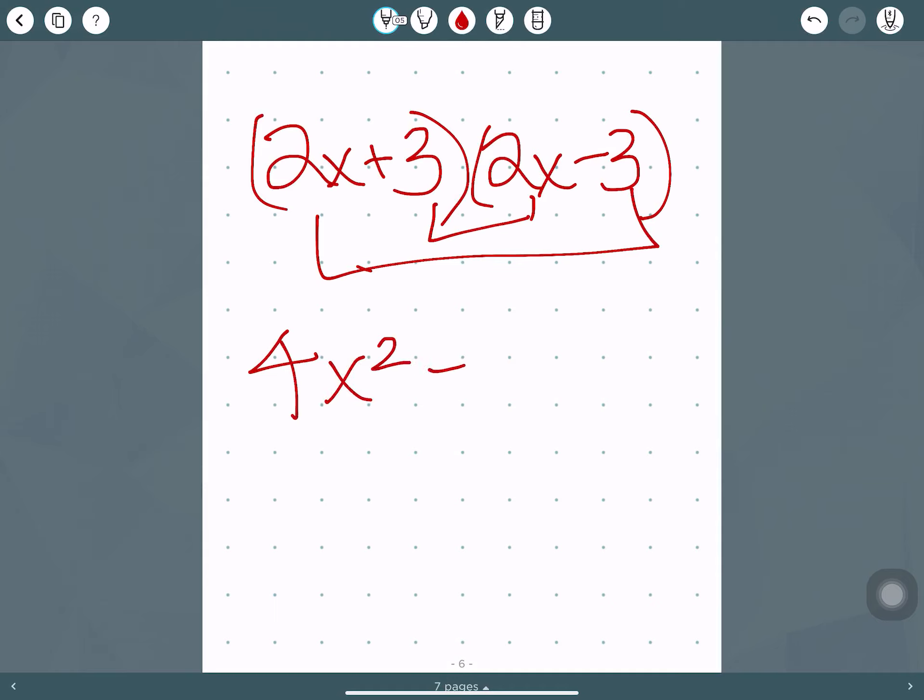So this is a special kind of situation when you're multiplying two binomials together. When you have, for example, 2x plus 3, 2x minus 3, we end up, if you remember back to the FOIL method, if you like that one, we end up with the middle terms canceling out. So 6x and negative 6x would cancel out, and we're just left with 4x squared minus 9. So this is called a difference of two squares.